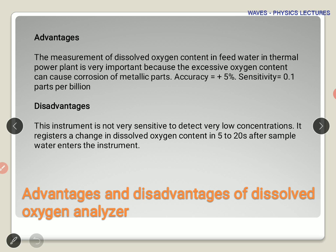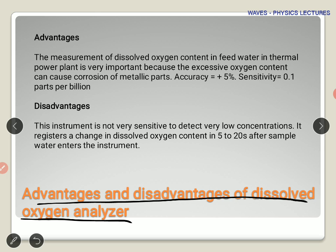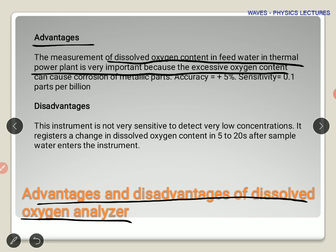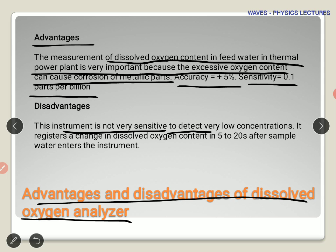What are the advantages and disadvantages of an oxygen analyzer? An oxygen analyzer measures the amount of dissolved oxygen in the feed water of a thermal power plant. If oxygen content is too high, it will cause corrosion to metallic parts, so the analyzer helps detect this before damage occurs. These analyzers are accurate up to 5%, and the sensitivity is 0.1 parts per billion. However, a disadvantage is that they are not too sensitive and cannot detect very low concentrations.